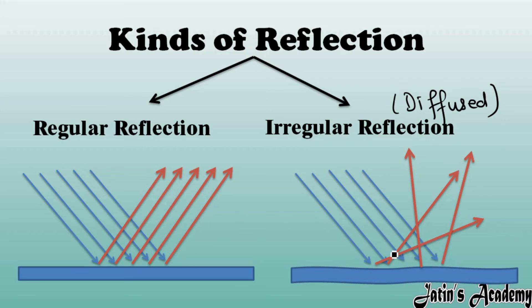Instead, the light rays reflect and diffuse in different directions. This is known as irregular reflection, where all the parallel beam of light, after reflection from an irregular surface, diffuses and moves into different directions.